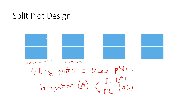I can apply the irrigation to an entire whole plot, then split it into half and apply different fertilizer to each half. That's why these halves are called split plots — I split the whole plot into two.